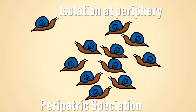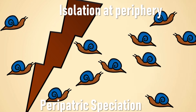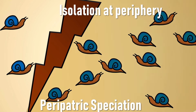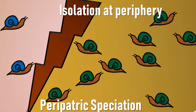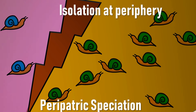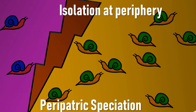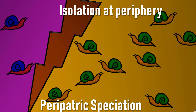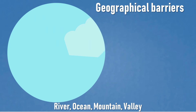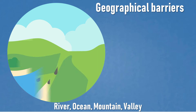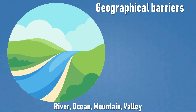Peripatric speciation is similar to allopatric speciation, wherein the geographical isolation occurs at the periphery, isolating a small population. This small population evolves separately from the parent population, and over a period of time two separate species are formed that can no longer interbreed. From the word 'peripatric' we can remember that speciation is occurring at the periphery.